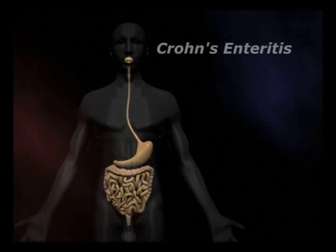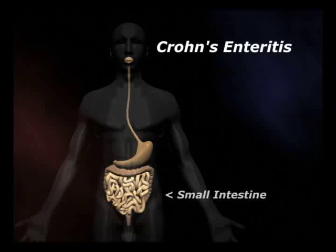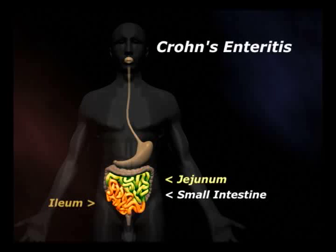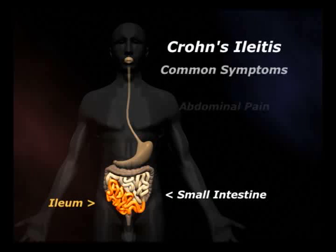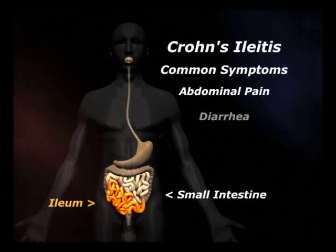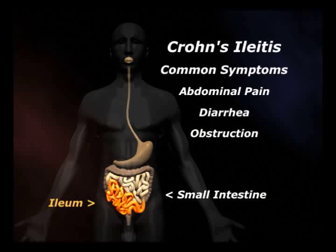Crohn's enteritis is an inflammation confined to the small intestine. The small intestine is made of two parts: the first part is the jejunum and the second part is called the ileum. If the ileum alone is affected, your condition would be called Crohn's iliitis. Common symptoms are abdominal pain and diarrhea, but obstruction of the small intestine can also occur.